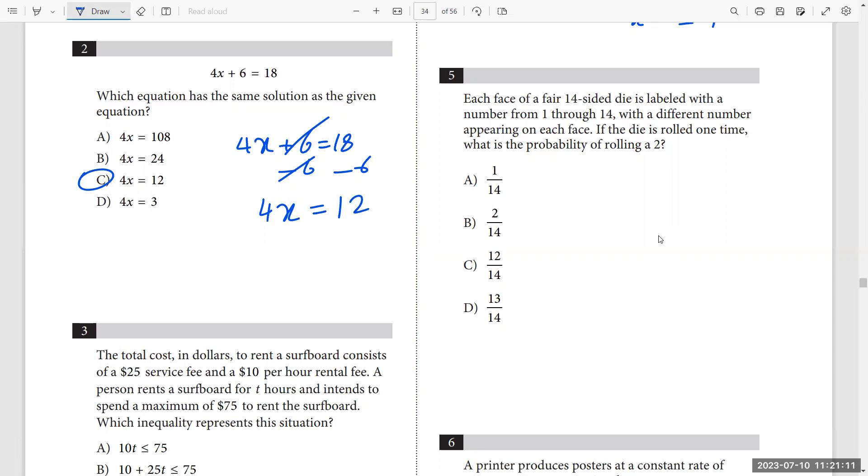Question five. Each face of a 14-sided die is labeled with a number from 1 to 14. So I have number 1, 2, 3 until 14. And with different number appearing on each face. If the die is rolled one time, what is the probability of rolling a 2? A 2 here occurring one time. I have only 1, 2. So probability of 2 or 3 or 4 of any number from 1 to 14 is simply 1 over 14. Because this is a fair die. Fair means the probability of each face is the same probability of any other face.